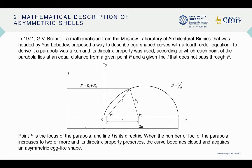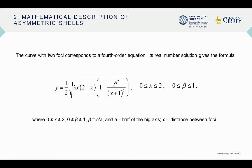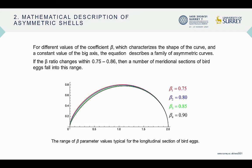Each point of the parabola lies at an equal distance from a given point F and a given line L. The curve with two foci corresponds to a fourth-order equation, whose real number solution gives the next formula. For different values of the coefficient beta, the equation describes a family of asymmetric curves.